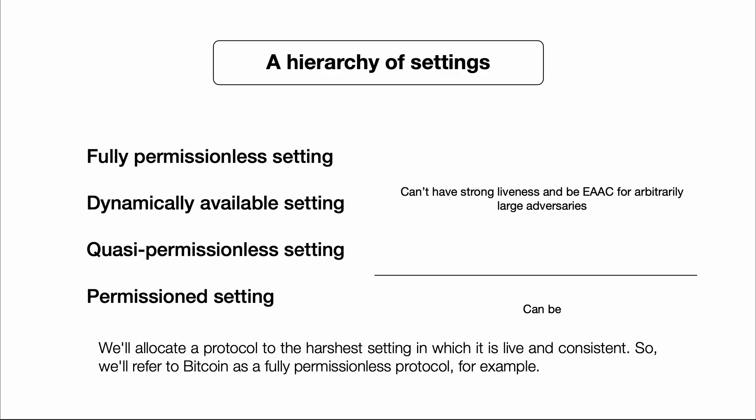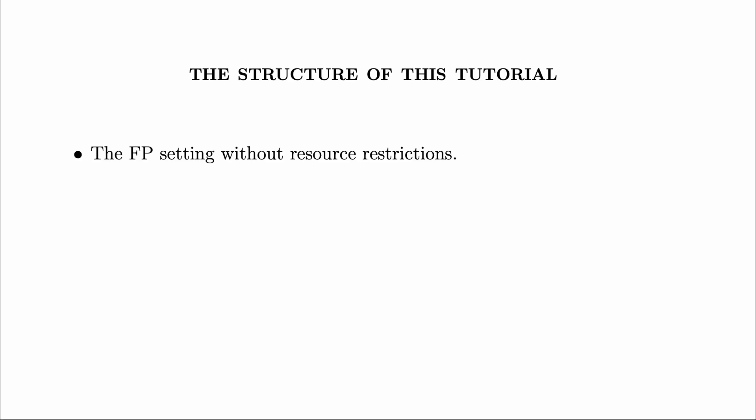There are various ways to separate the quasi-permissionless and permissioned settings. One way is to use the EAC property — if you want to understand that, check out another paper by me, Tim, and Eric Budish. We'll also see another way of separating those two settings later on. That's a brief overview; I'll define all these settings more precisely and we'll see proofs of some of the separations.